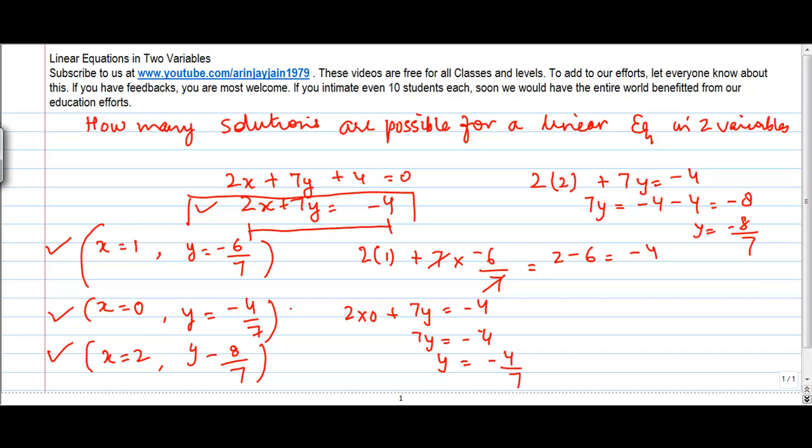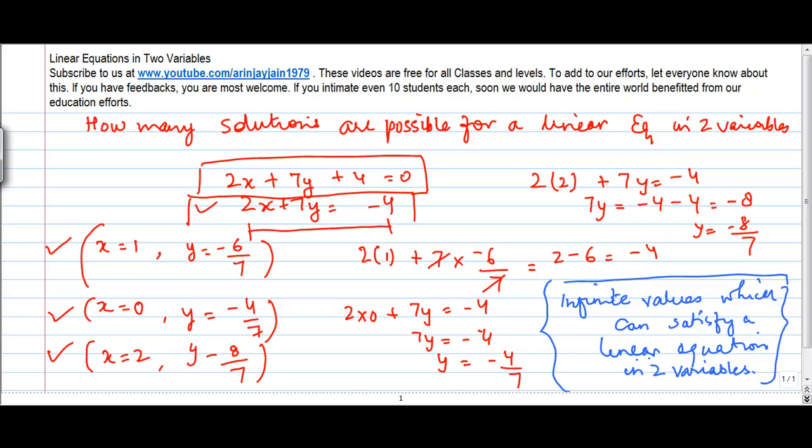So, by doing this, what we find out is that the linear equation in two variables has infinite solutions. There could be infinite values which can satisfy a linear equation in two variables, unlike a linear equation in one variable where you had only one solution to a particular equation.